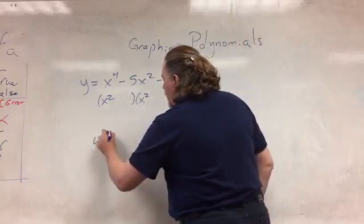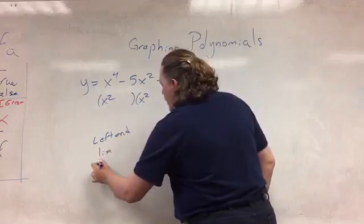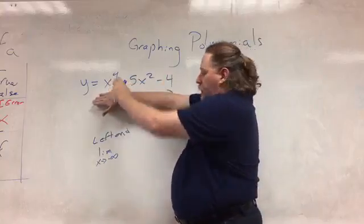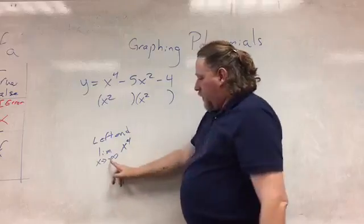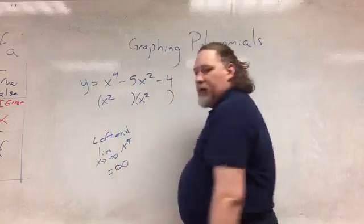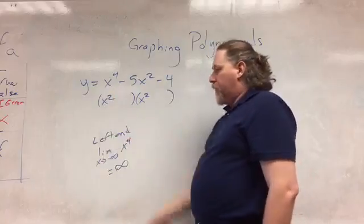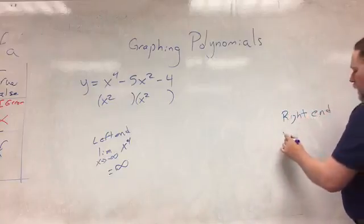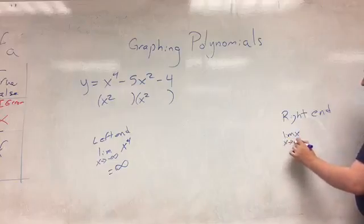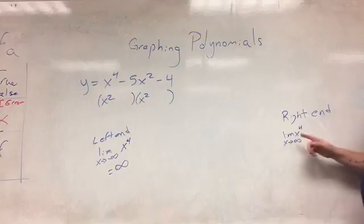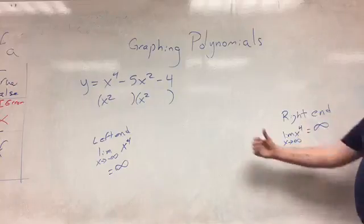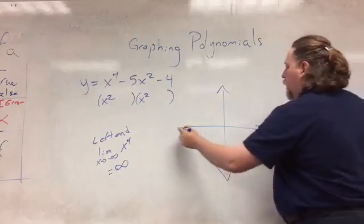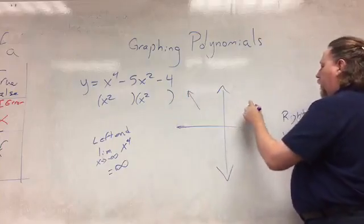I need the limit as x heads toward negative infinity of just the biggest power term: x to the fourth. A negative number to an even power gives us positive infinity — as we go to the left, this graph goes upward. On the right, the limit as x heads toward positive infinity of x to the fourth: a positive to the fourth gives me infinity — as we go to the right, the graph goes up. So both ends go up.